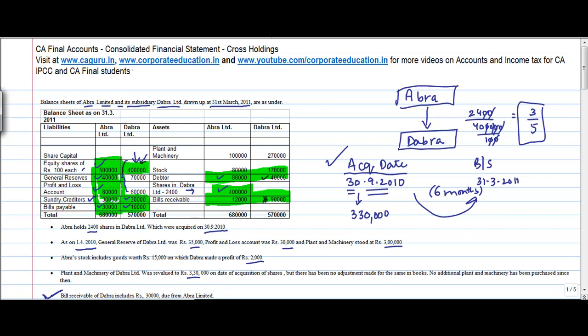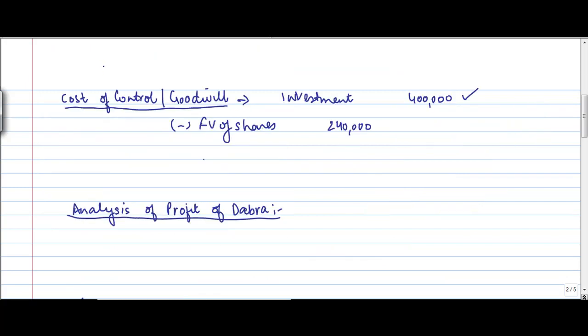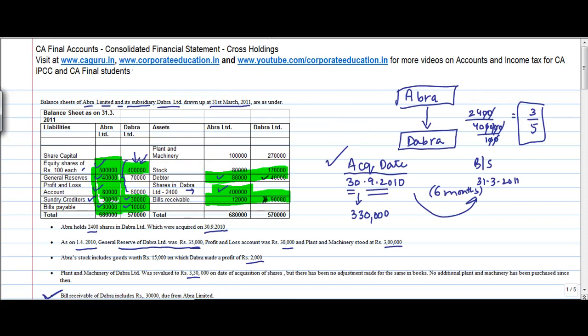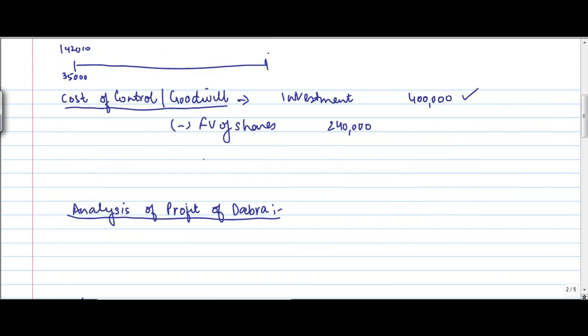So what I have done is I have plotted this 4,00,000 now. Now general reserve of Dabra Limited is 70,000. And what we are told is that as on 1-4-2010, the general reserve of Dabra Limited was 30,000. So let's see this. Now there are three dates. One is 1-4-2010, when the value of the general reserve was 35,000. Then we are sitting today when it is 70,000. So you have 31-3-2011, when this is 70,000.